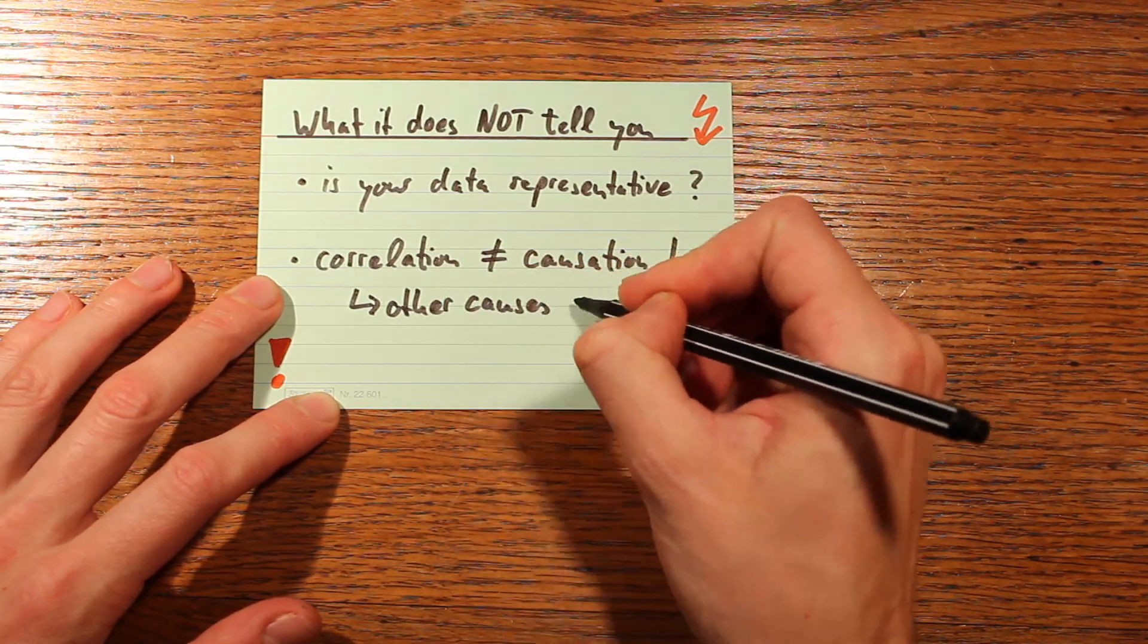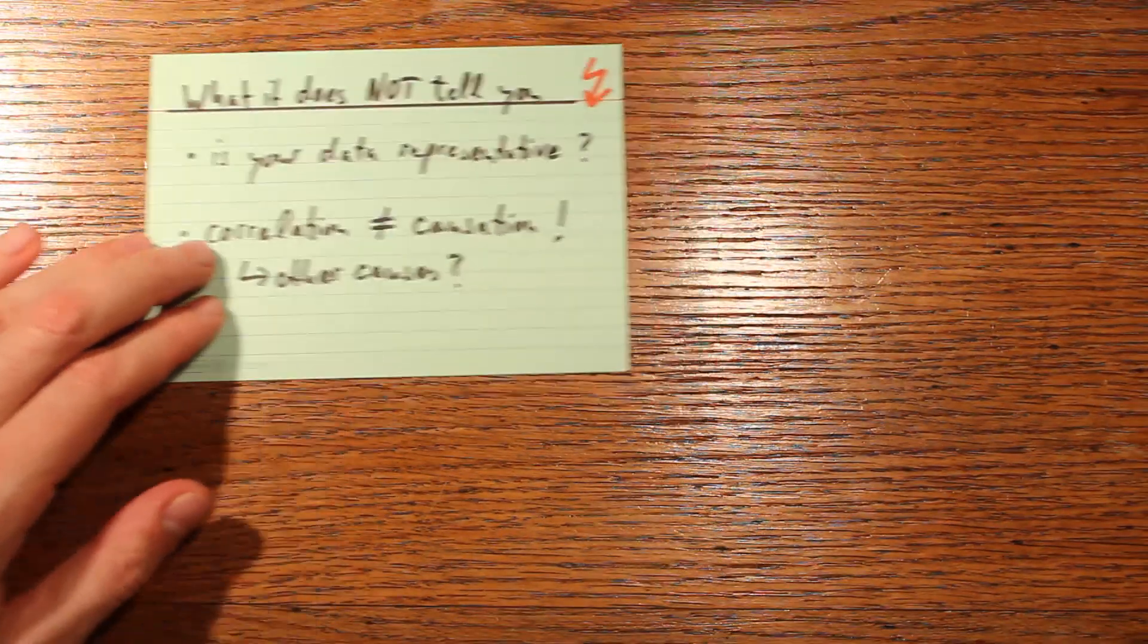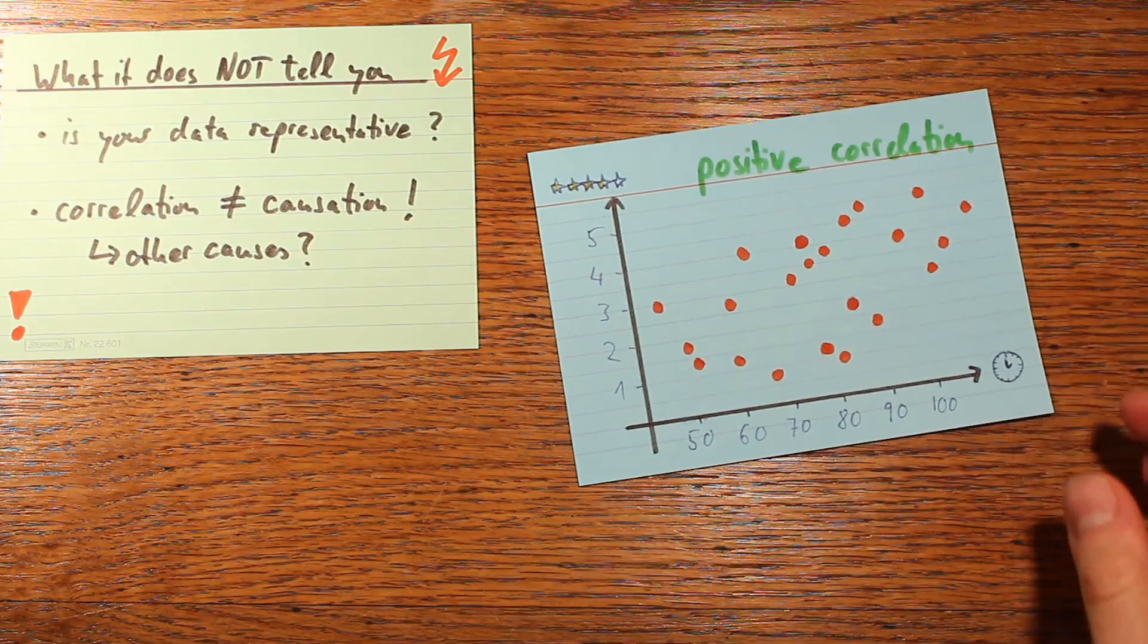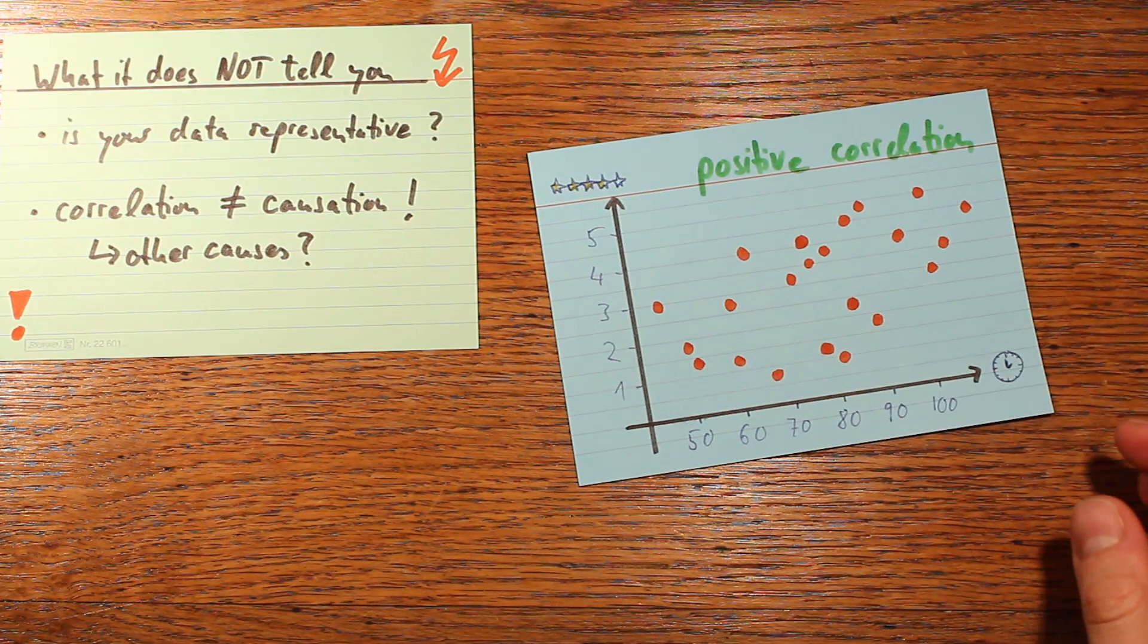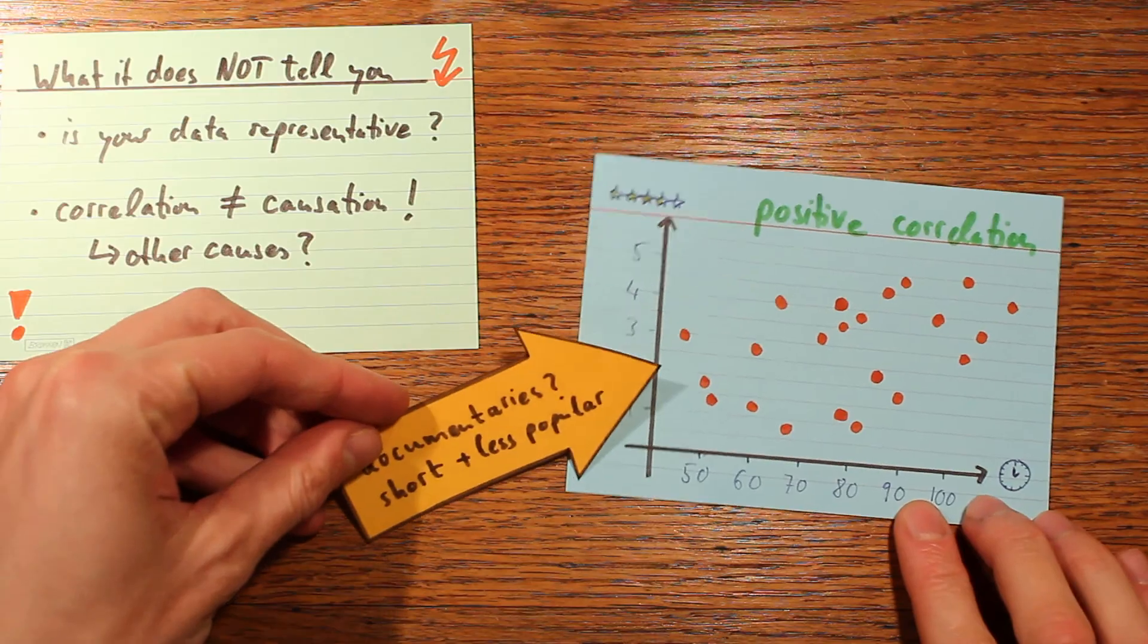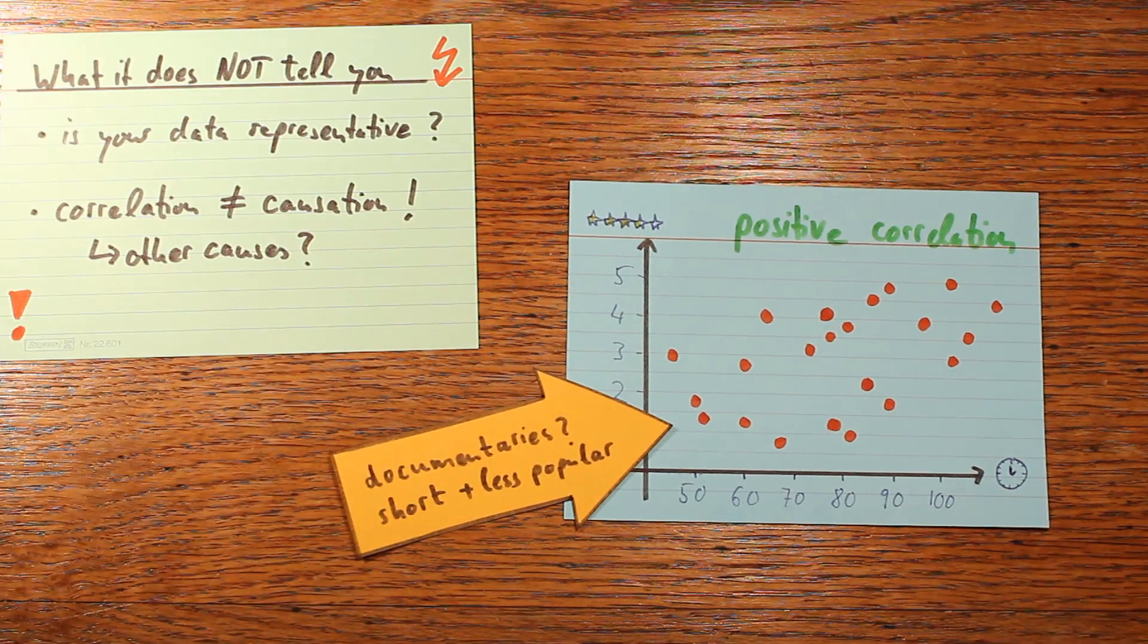Maybe a lot of the shorter movies are documentaries, because documentaries tend to have shorter runtimes. But also documentaries might be less popular with audiences, because they are less entertaining, and so they get fewer stars. So that's why in our dataset, the shorter movies tend to get the worse ratings.